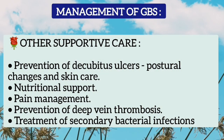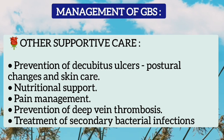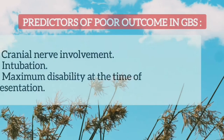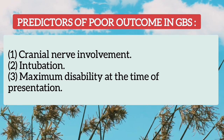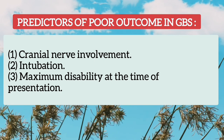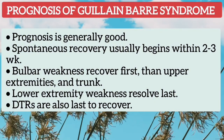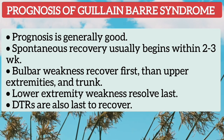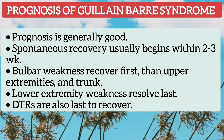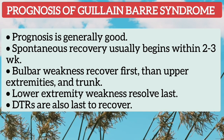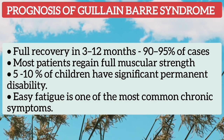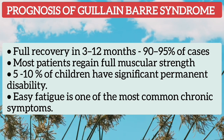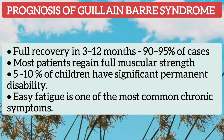Other supportive care includes prevention of decubitus ulcers, positional changes and skin care, nutritional support, pain management, prevention of deep venous thrombosis, and treatment of secondary bacterial infections. Predictors of poor outcome in GBS include cranial nerve involvement, intubation, and maximum disability at the time of presentation. Prognosis of GBS in children is generally good. Spontaneous recovery usually begins within 2 to 3 weeks — bulbar weakness recovers first, then upper extremities and trunk, and lower extremity weakness resolves last. Full recovery in 3 to 12 months occurs in 90 to 95% of cases; however, 5 to 10% of children have significant permanent disability.